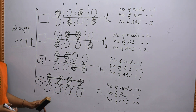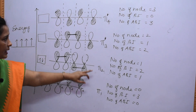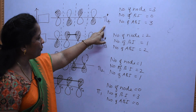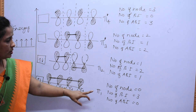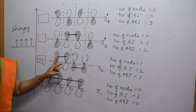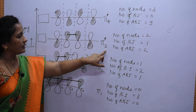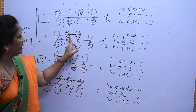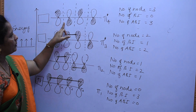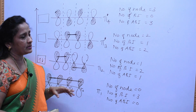In 1,3-butadiene there are 4 pi molecular orbitals: 2 bonding orbitals designated as pi 1 and pi 2, and 2 anti-bonding orbitals designated as pi star 3 and pi star 4. For pi 1: 0 nodes, 3 bonding interactions, 0 anti-bonding interactions. For pi 2: 1 node, 2 bonding interactions, 1 anti-bonding interaction. For pi star 3: 2 nodes, 1 bonding interaction, 2 anti-bonding interactions. For pi star 4: 3 nodes, 0 bonding interactions, and 3 anti-bonding interactions.